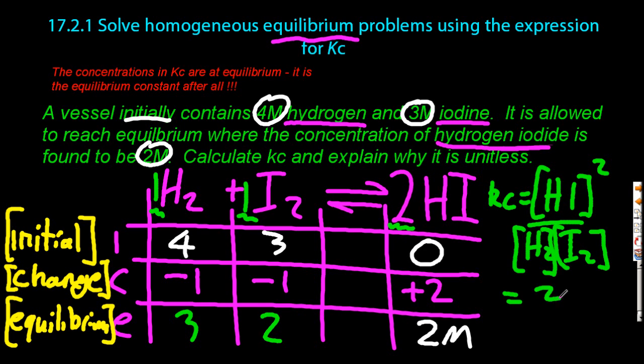Pop them into Kc gives me 0.66 recurring. Let's try and work out why that's unitless. At the top we have molar squared, and at the bottom we have molar times molar. That all cancels out, so it has no units.